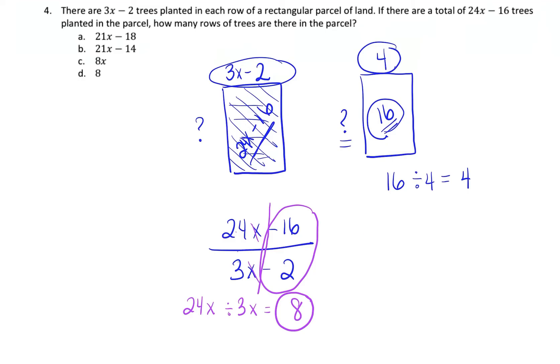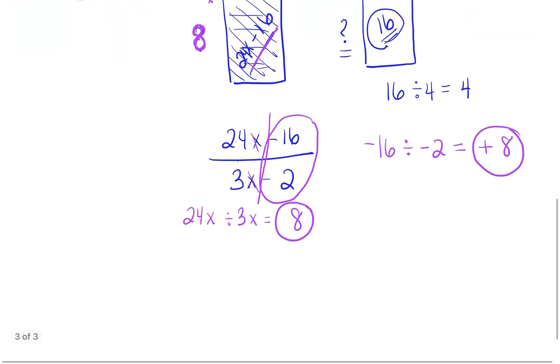Let's try this other side. Negative 16 divided by negative 2. A negative divided by a negative is a positive, and 16 divided by 2 is 8. So it seems that both of these sides are being divided by 8. Is 8 an option here? Yes, it is.